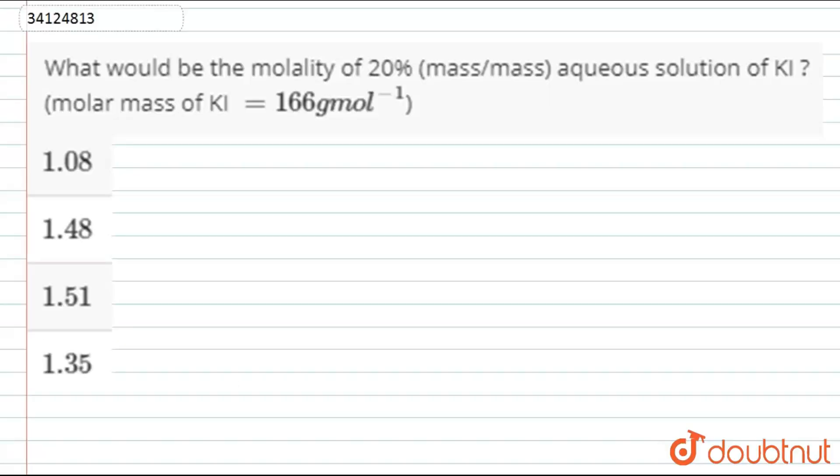Look, this question is asking what would be the molality of 20% (this is weight by weight ratio) aqueous solution of potassium iodide. The molar mass of potassium iodide is 166 grams per mole.